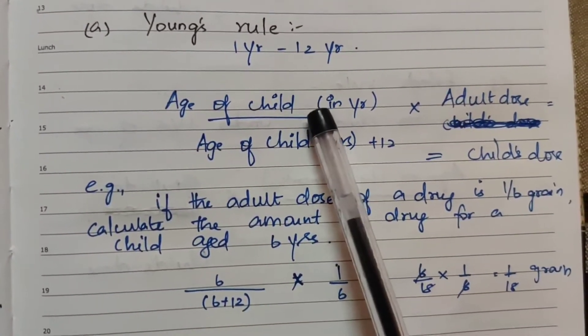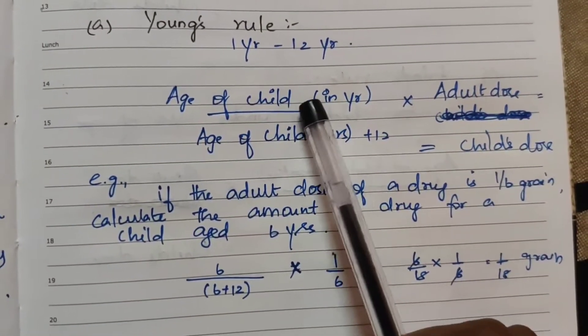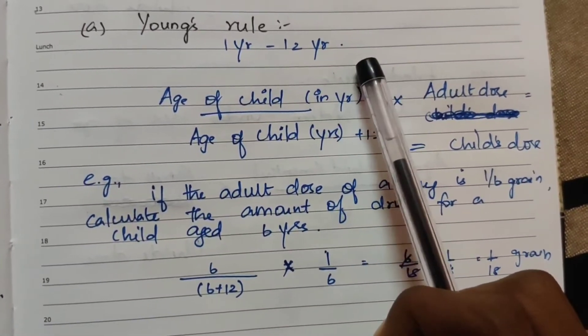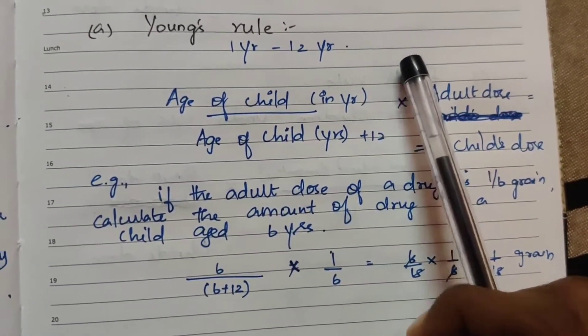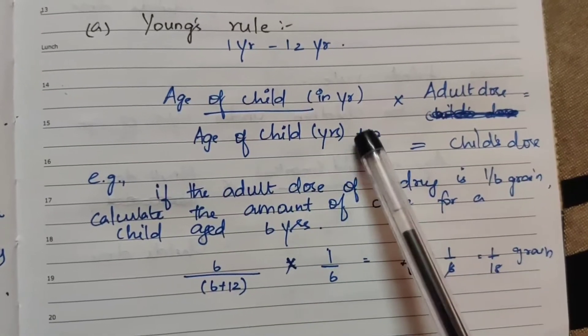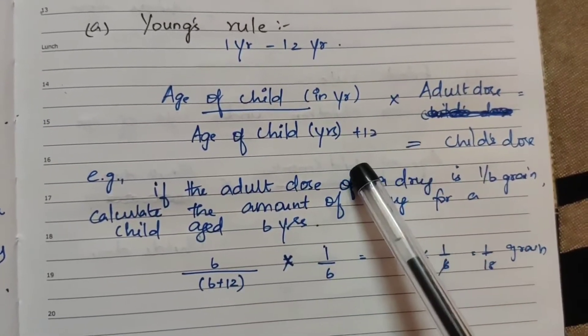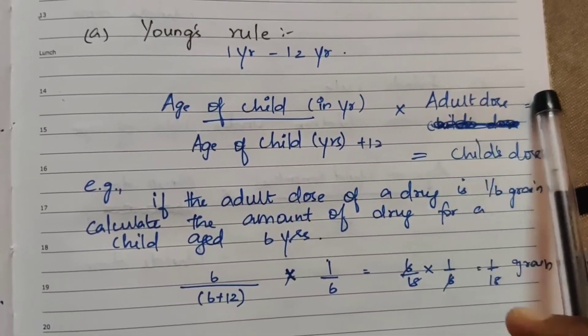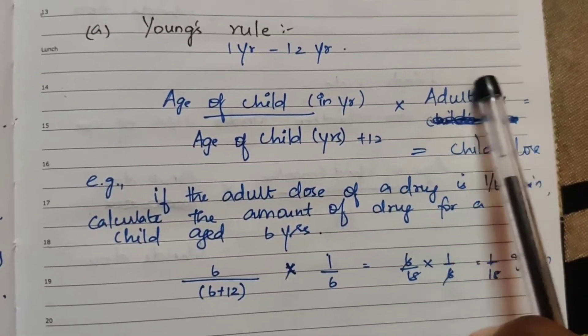That is the child dose. What is the age? For example, 6 years is 6 years, 5 years is 5 years. By age of child, that is 5 plus 12. In case it is 5 years baby, multiply by adult dose.